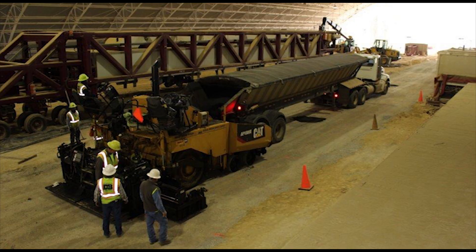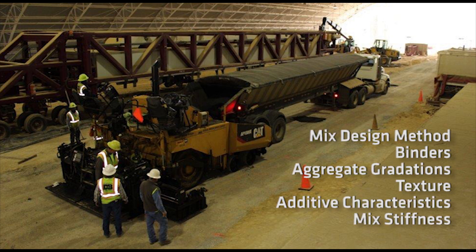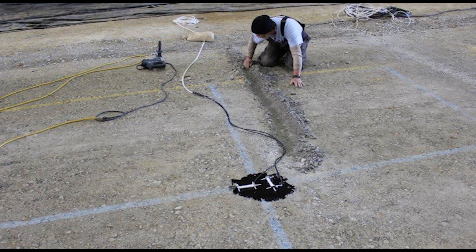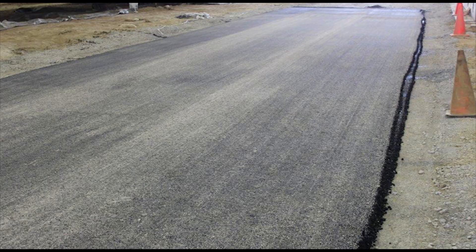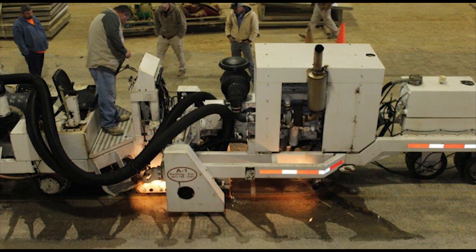The section is now ready for paving. The hot mix asphalt is also characterized. Several data elements are looked at, including mixed design method, binders used, aggregate gradations and texture, additives, mixed stiffness, and other properties. Prior to placement of the asphalt, asphalt strain gauges are installed to measure strains at the bottom of the asphalt layer. The asphalt is then placed and compacted. Asphalt thicknesses and geometry are measured, and grinding of the surface is performed, if needed, to ensure thicknesses are as designed.